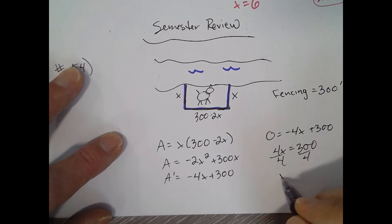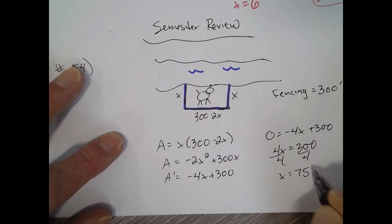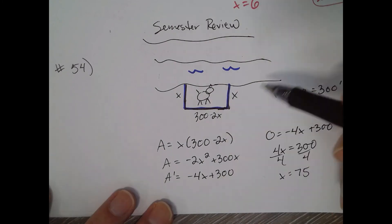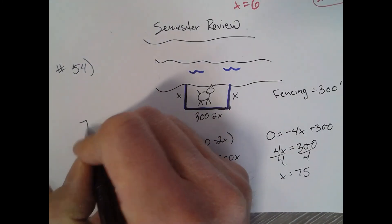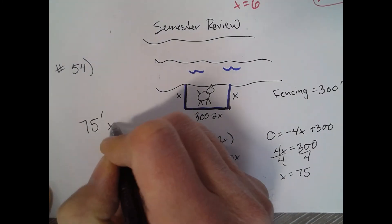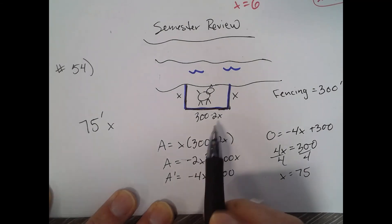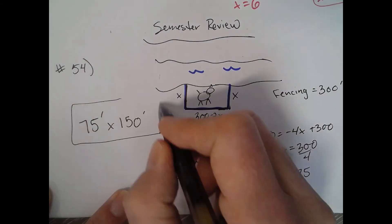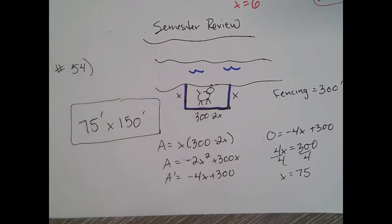So x is 75 feet. What are we trying to find? Find the dimensions that will produce maximum area. Okay, so if x is 75 feet, and then 300 minus 150, so 150 feet. That will produce the maximum area: 75 by 150.